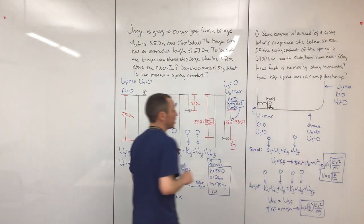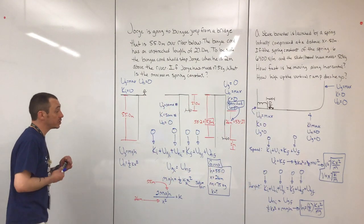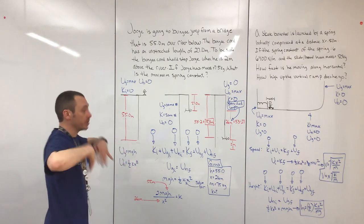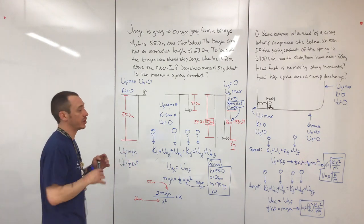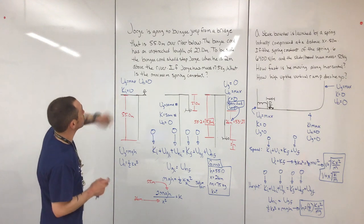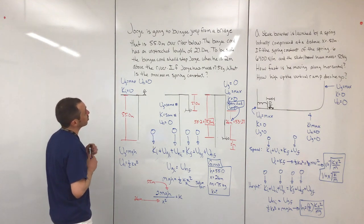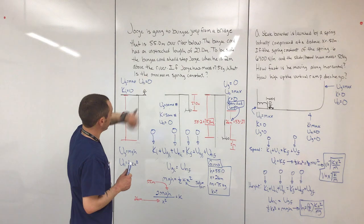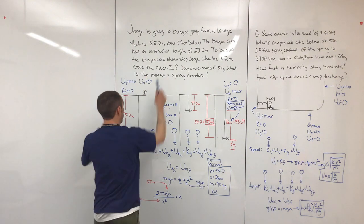I just wanted you to see two problems together. I'm going to make two separate videos just so that you can see there's a theme here — there's something that you want to be seeing. You don't see things individually. So the first question: George is going to bungee jump off a bridge that is 55 meters over a river below.